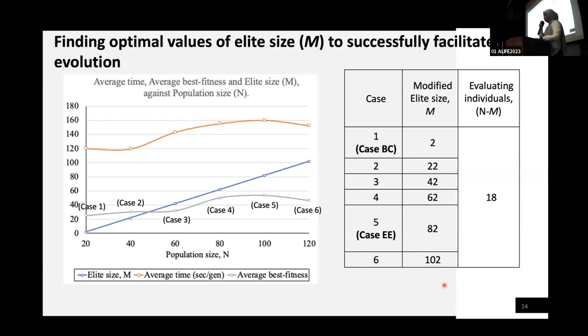In addition to previous experiment, we want to find the optimal values of elite size to successfully evolve the creatures in this environment. We carry out experiments using different values of elite size, but we maintain the evaluating individuals to be 18 based on the previous experiment. From the results, we can see that the cost has ranged from only 120 to 160, which is not a big difference. We can see that the average of best fitness is the highest in case 5. Even though the cost is the highest, the cost difference is not significant from all the other cases.